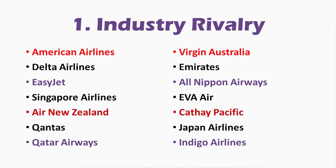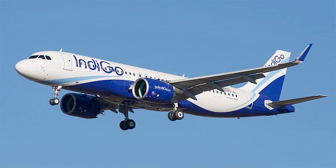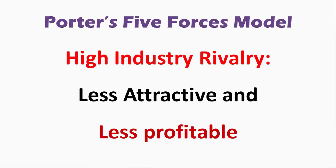In the airline industry, there are many airline companies operating in different countries and the rivalry is very high. You may find a lot of rivalry among airline companies like American Airlines, Delta Airlines, Singapore Airlines, Air New Zealand, Qantas, Qatar Airways, Virgin Australia, Emirates, All Nippon Airlines, EVA Air, Cathay Pacific, Japan Airlines, IndiGo Airlines, and so on. So if the rivalry is high, it means it will be less attractive and less profitable. But if you just take competition into the picture, you can't judge industry attractiveness — you need to look at the four other forces.